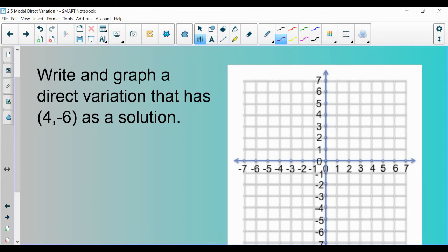So another type of question that we are going to ask is, I give you a point like 4, negative 6, and I say, this is a direct variation example. Graph it and write an equation for it. This shouldn't be too bad. We know that it passes through the point 4, negative 6. 4, negative 6 is this point right here.